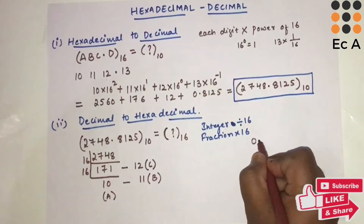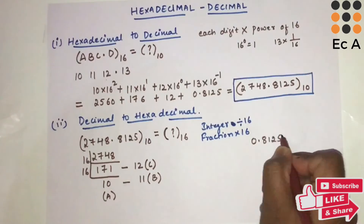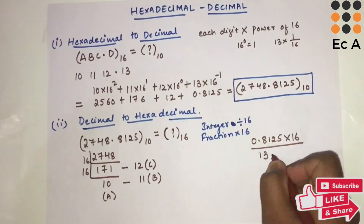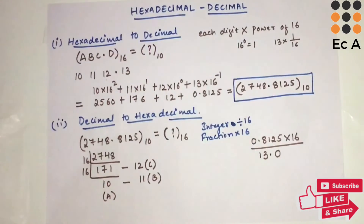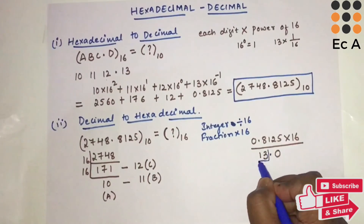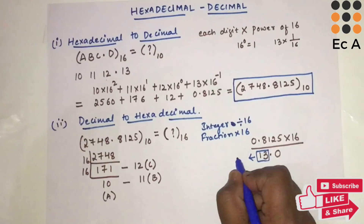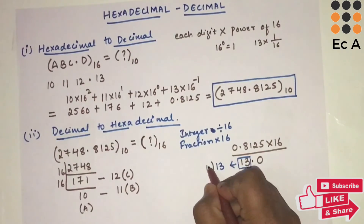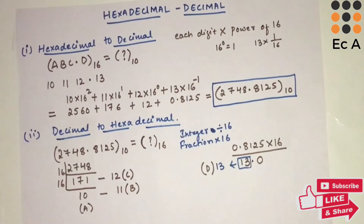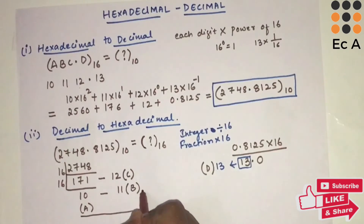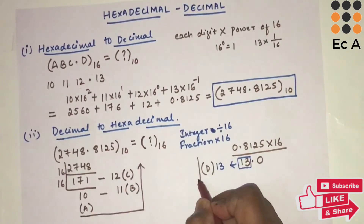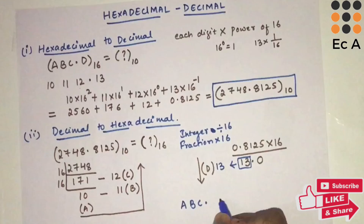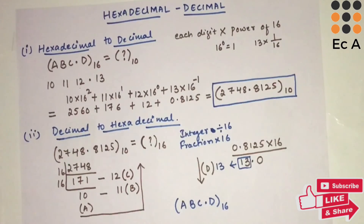Now let us take the fractional part 0.8125 and multiply it by 16. We get 13.0, so we take out 13 from the result. The hexadecimal equivalent of 13 is D. For the integer part, we read the remainders from bottom to top, and for the fractional part we read from top to bottom. Finally, the answer is ABC.D base 16, which is the hexadecimal equivalent of the given decimal number.